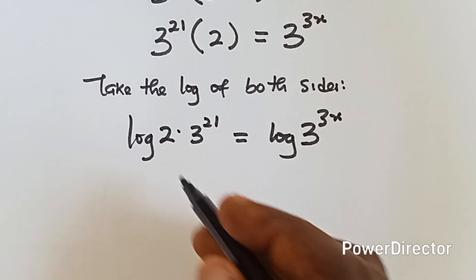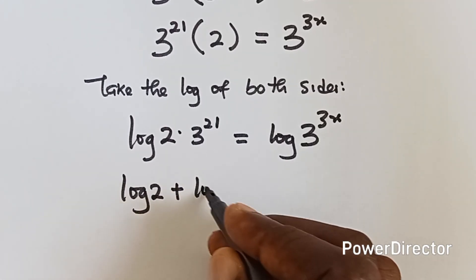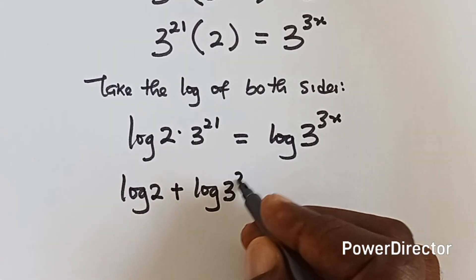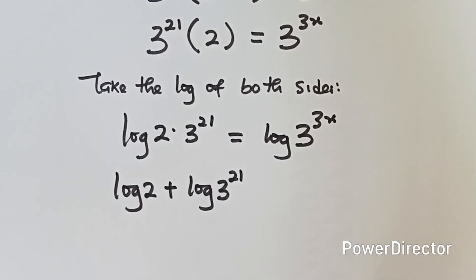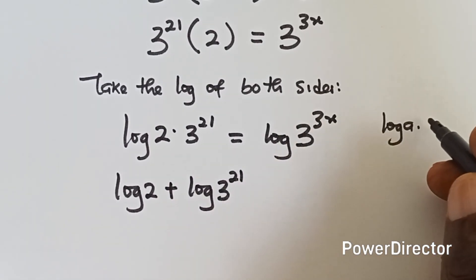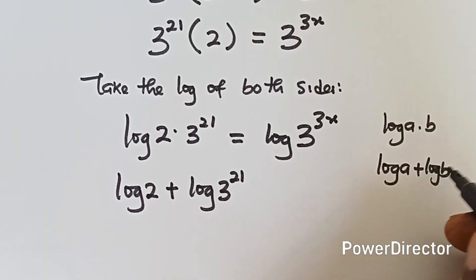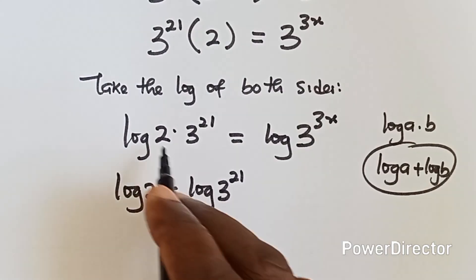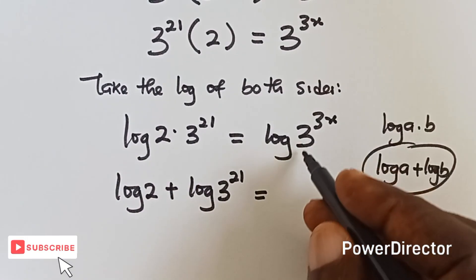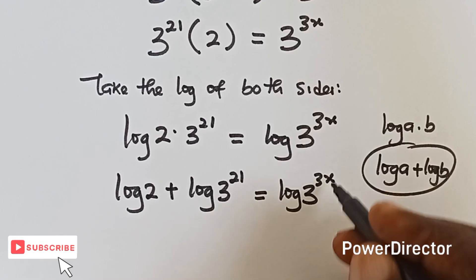And then we can write this as log 2 plus log 3 raised to power 21. One of the laws of logarithm says that if we have log a multiply b, then it's same thing as log a plus log b. Okay, so that is what I have applied here.